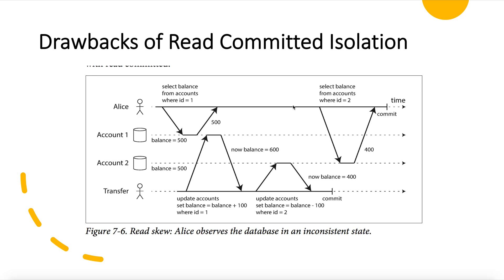There are two transactions which Alice starts: transaction one (T1) and transaction two (T2), with time plotted on the x-axis. Alice first finds out the balance of account one and gets 500. T1 is already in progress when T2 begins, transferring money from account two to account one. T2 updates account one by adding 100 rupees, making its balance 600. In the same transaction, before it is committed, account two is updated with minus 100, making its balance 400.